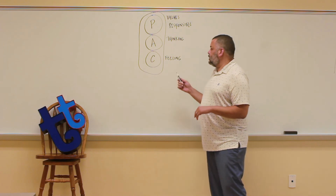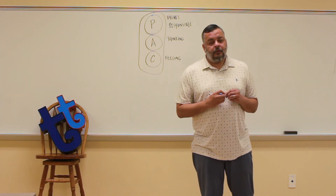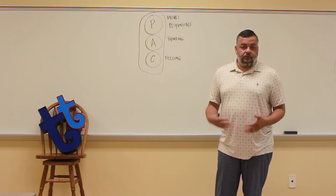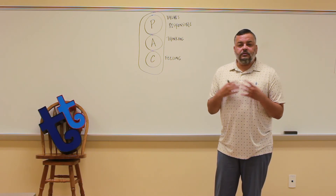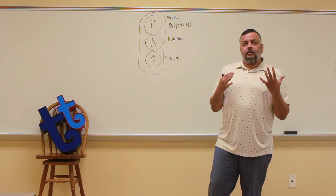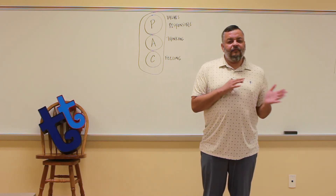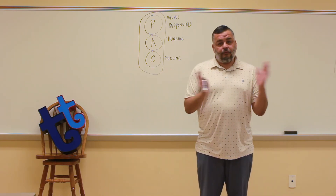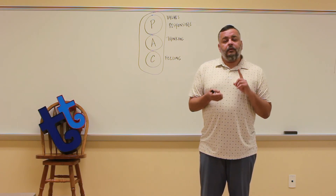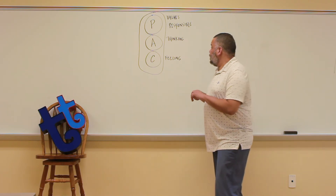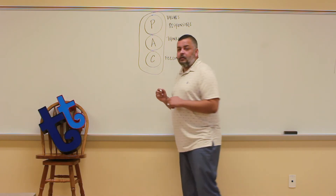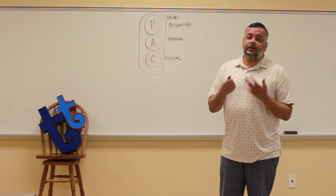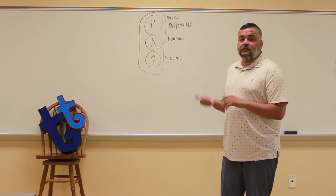Dr. Berne believed that the best of us resides in the child, and that any time anyone is going to do any type of deep change, the child has to be on board. The child is that special part of us — it exists from about age 5 to 12, the same age range where the parent ego state began to form. In our child ego state, this is where we get all of our feelings — all those wonderful experiences from childhood and all those terrible experiences — they all exist in the child ego state.